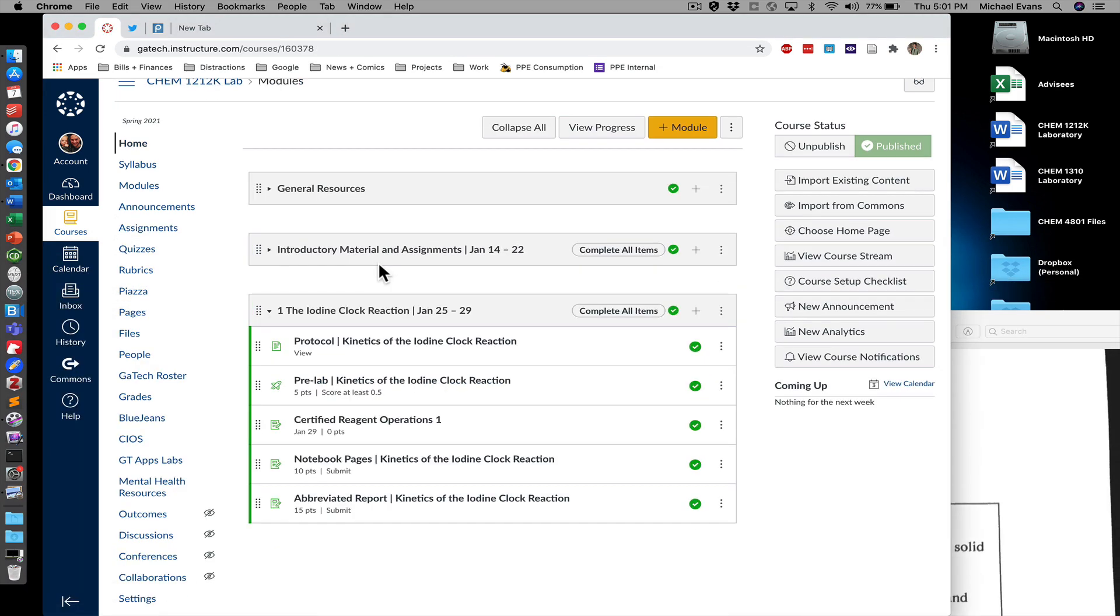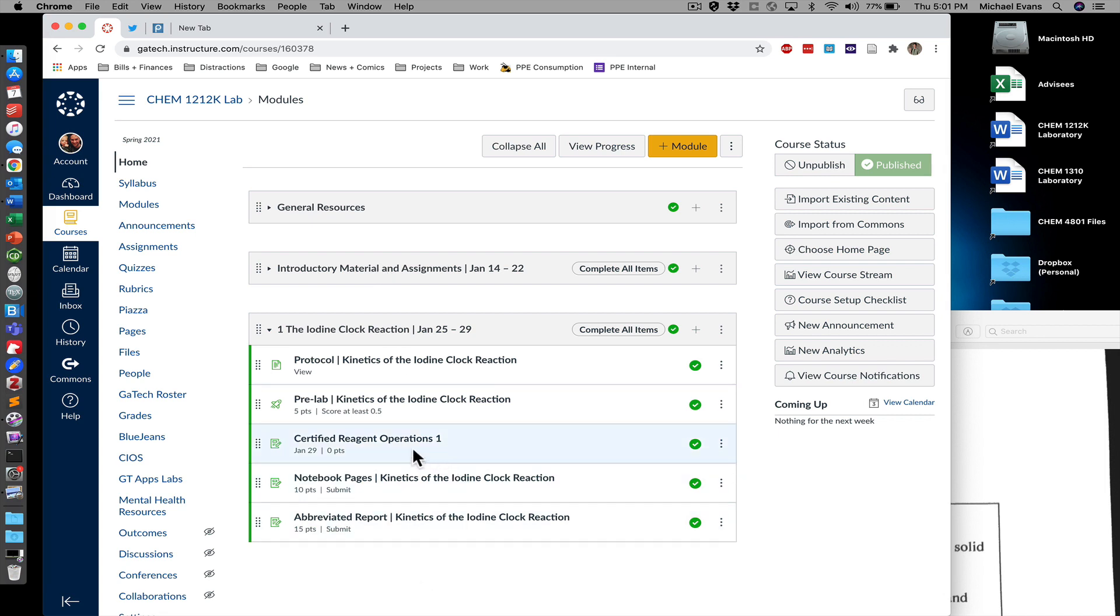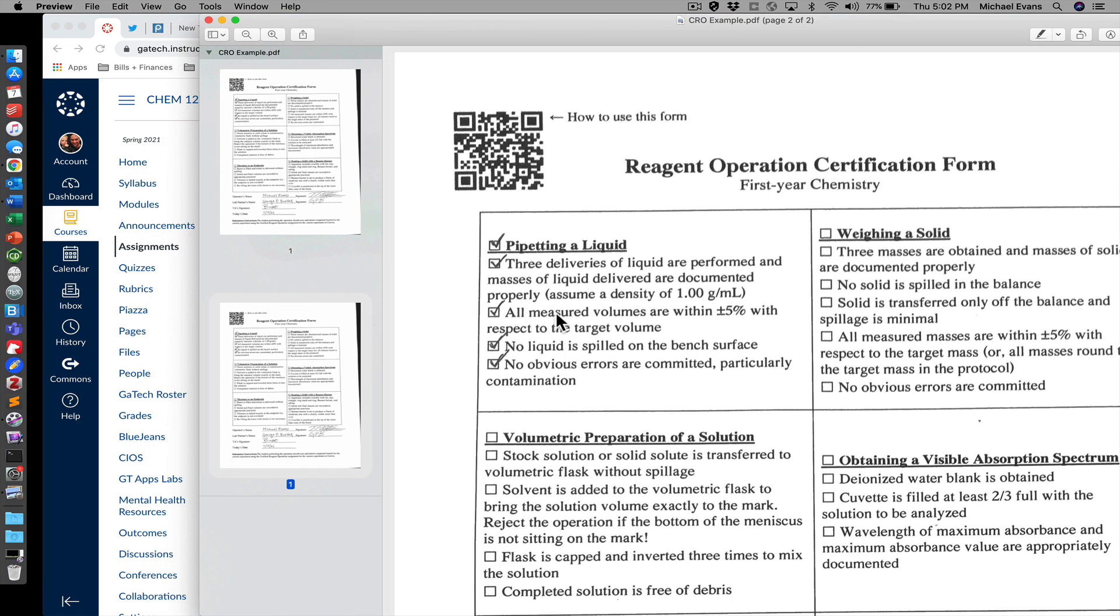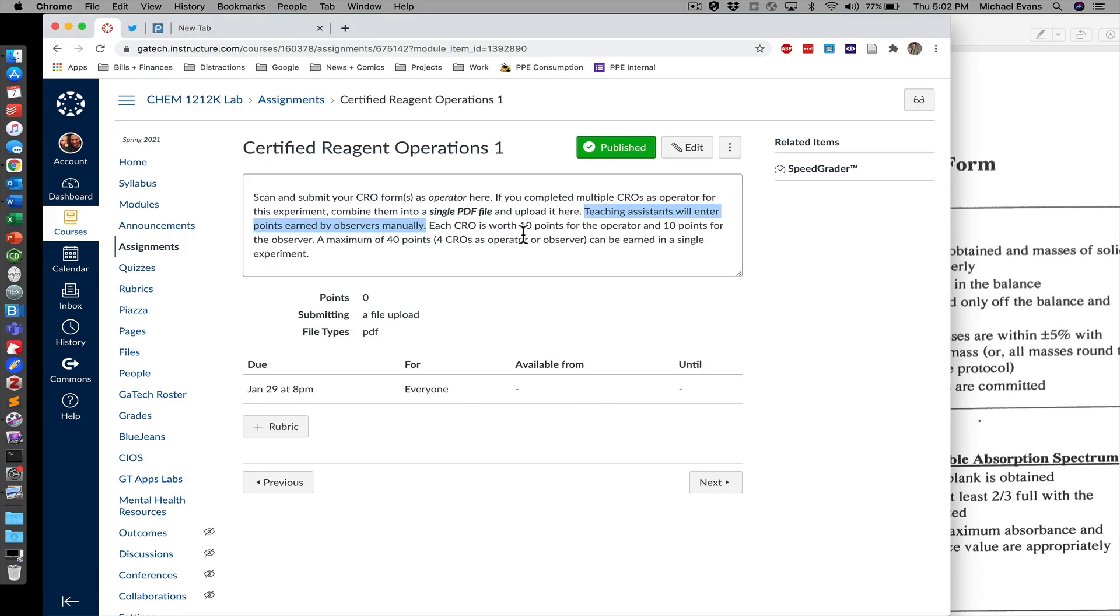I'm going to head to the CHEM 1212K lab Canvas site in spring 2021. The certified reagent operations assignment is found within the first experiment module. There will be one of these assignments for each experiment and their numbers will correspond to the number of the experiments. This shows up in the middle of the module between the pre-lab and notebook pages. A brief description of things I already told you related to submitting your CRO, some information about the points and the limit are here. Just a note for observers, the teaching assistants are going to enter points for observers manually. So as the observer you won't submit anything.